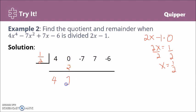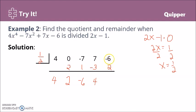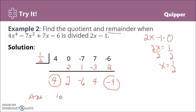0 plus 2 is 2. Then 2 times 1/2 equals 1. Negative 7 plus 1 is negative 6. Negative 6 times 1/2 is negative 3. Positive 7 plus negative 3 is 4. Then 4 times 1/2 is 2. Negative 6 plus 2 is negative 4. So the remainder is negative 4 and the leading coefficient of the quotient is 4.